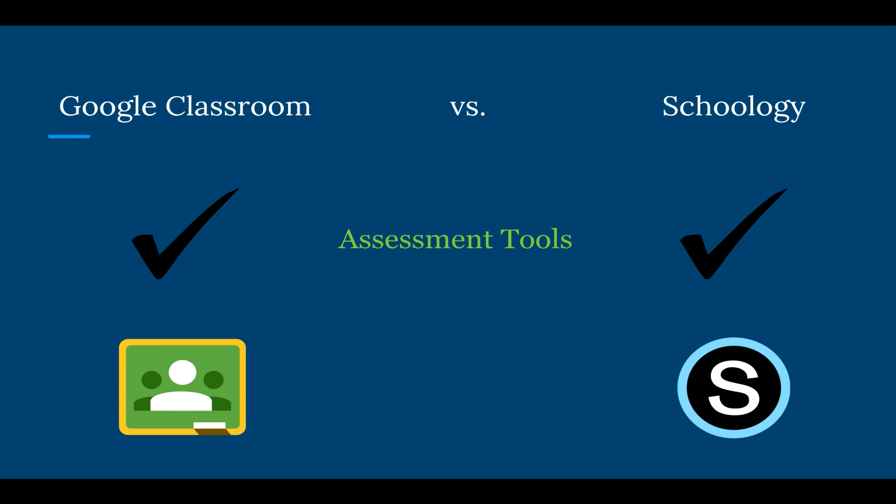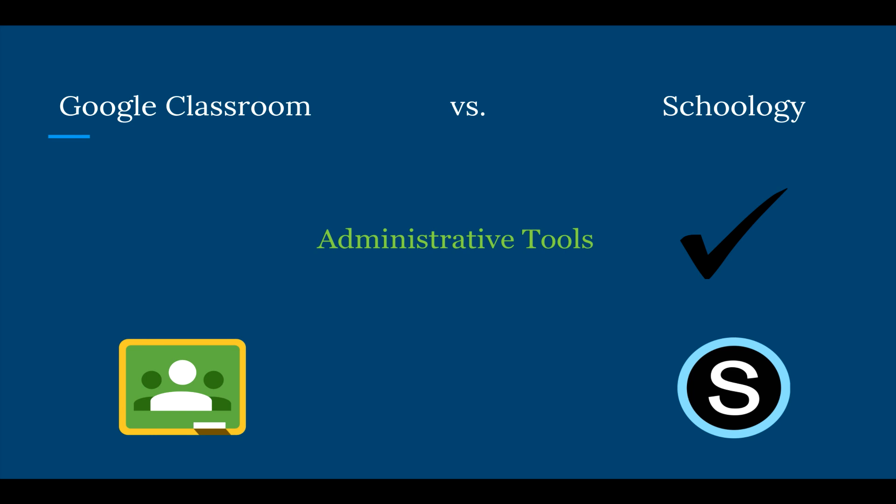The next area is the administrative tools that the LMS provides, and Schoology takes this one. Schoology allows for many administrative tools to be used within the LMS — teachers can take attendance inside the system, set up grading criteria, and implement behavior modification systems using badges for positive behaviors that teachers can award to students. Google Classroom, on the other hand, offers very few administrative options beyond the ability to set up a gradebook and grade student work.